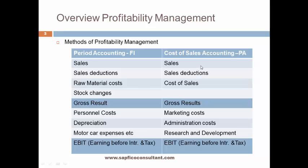Whereas in PA, we show sales, sales reduction, cost of sales — we don't show any stock changes — and we get the gross result. In PA, we focus more on the functions of the organization: marketing cost, administration cost, research and development, all of them contributing to the sales and profit of the organization. So marketing cost can comprise personal cost, depreciation, motor car expenses. It is more focused on the functions which are rendering to the organization in terms of profitability. Thereafter we get the earnings before interest and tax. In both forms, the profit is the same — only the depiction is different.